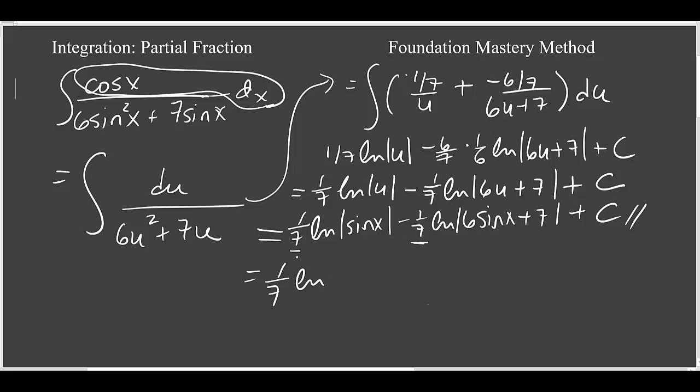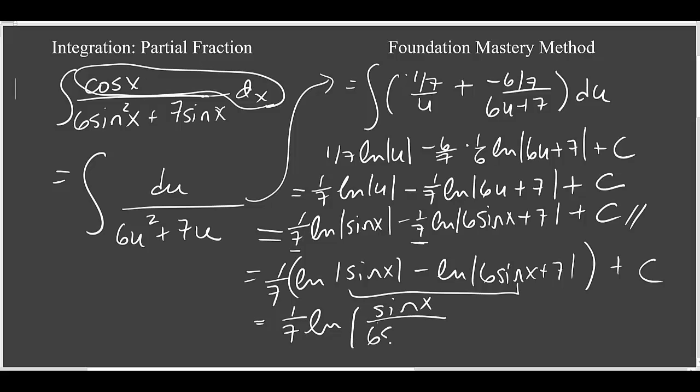And we'd have the natural log of the absolute value of sine of x minus the natural log of the absolute value of 6 sine of x plus 7. And then combine these two terms using laws of logarithms to give us 1-seventh times the natural log of the absolute value of sine of x over 6 sine of x plus 7. So that's just another form of the answer.